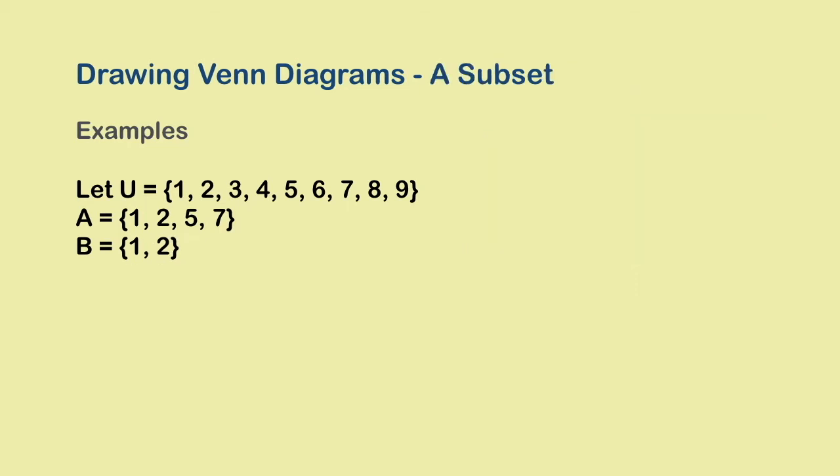Okay, let us now draw the Venn diagram for this problem. Here, as always, A and B are both subsets of the universal set, but the important point is that B is a subset of A too. Everything that B has is also in A.